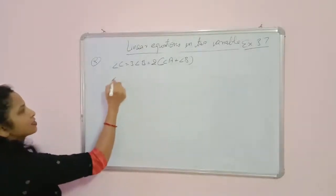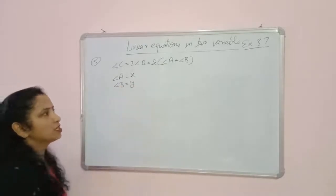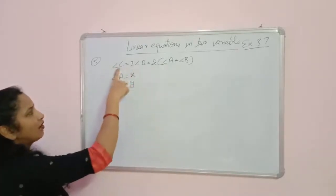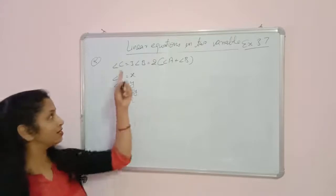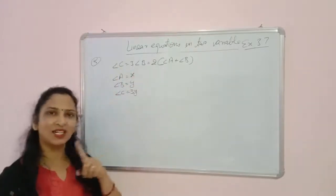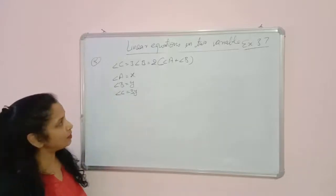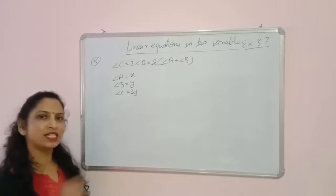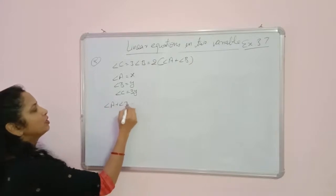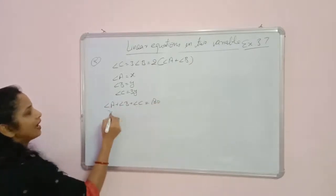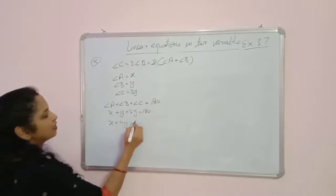Let angle A equal x and angle B equal y. From the relation, angle C equals thrice of angle B, so angle C equals 3y. In triangle ABC, the sum of all angles equals 180 degrees. So equation 1: x plus y plus 3y equals 180, which gives x plus 4y equals 180.